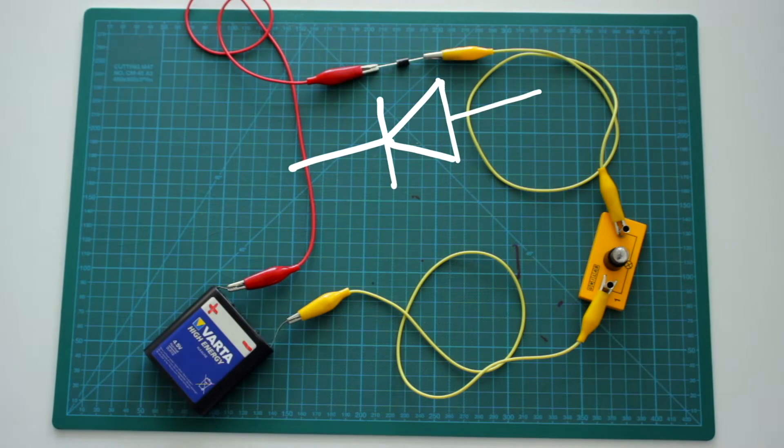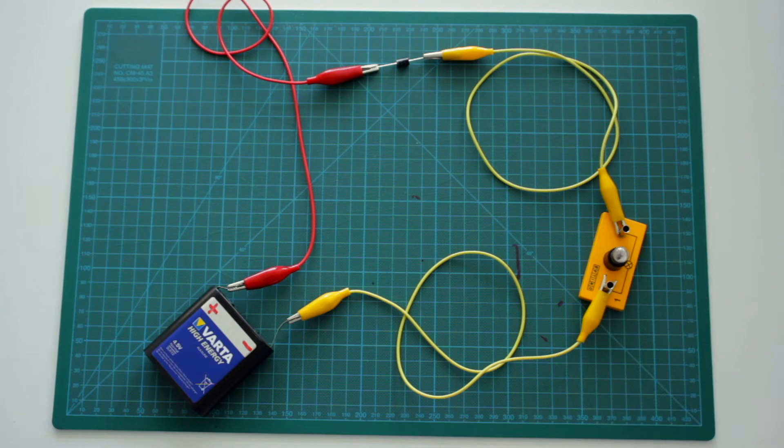And this time, there is no current flowing through the diode, which is indicated by the fact that the light bulb does not light up.